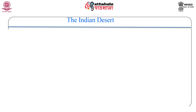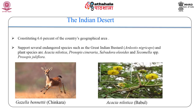The Indian desert is biogeographically the eastward extension of the Sahara-Arabian desert system, which spread through Iran, Afghanistan and Baluchistan to the Thar area on the Indo-Pakistan border. This arid zone falls west of the Aravalli hill range and comprises both the salt and sand deserts of north-western India, consisting of 6.6% of the country's geographical area. This zone also has large expanses of grasslands that support several endangered species such as the great Indian bustard. The plant species include Acacia nilotica, Prosopis, Salvadora and other species.